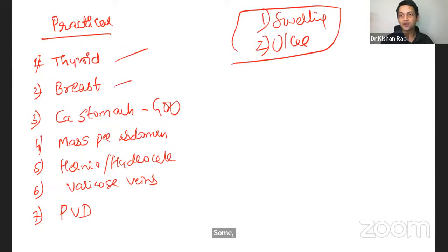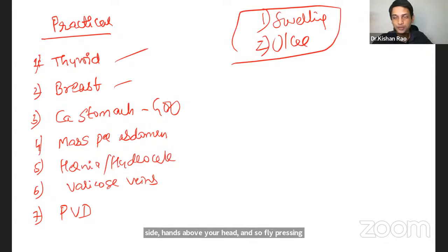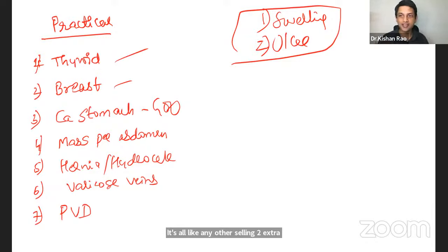And about breast, what's more important breast is the different positions in which you examine, hands by the side, hands above your head, hands pressing against the hip bone. Those are the why that you should know. And some of the terminologies are there. Those definitions you should know. What is it? Dimpling, puckering, tethering, and peau d'orange appearance. All those things. Some technical terms are there. Those definitions you should know. And if you know that breast case is done, carcinoma stomach, just that it's all like any other swelling, two extra examination, that is, succussion splash, and asphalto percussion. Those are the only two salient features about this case.